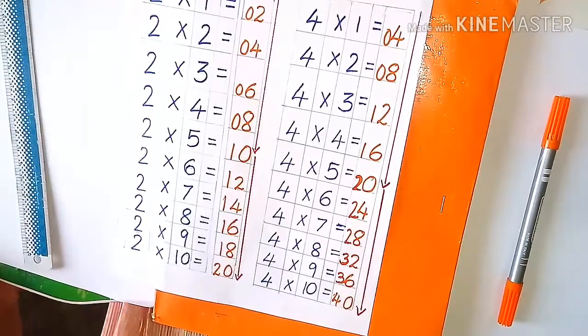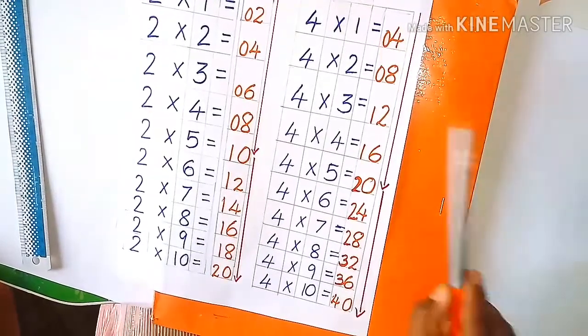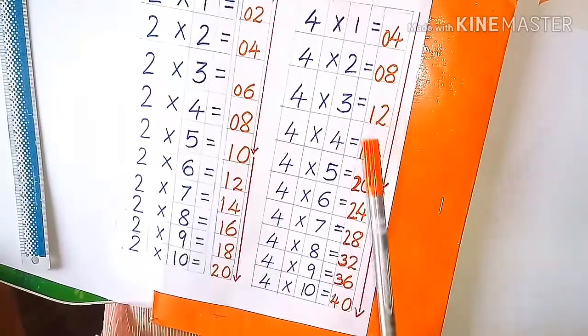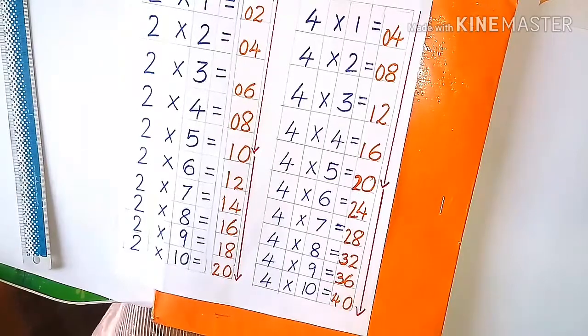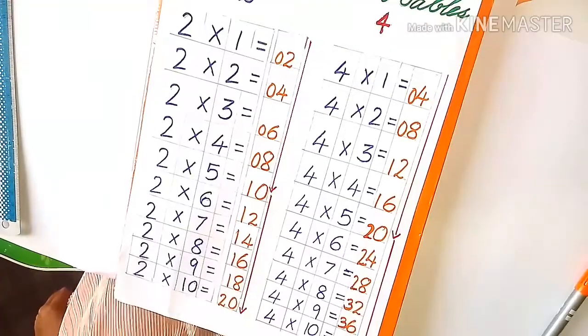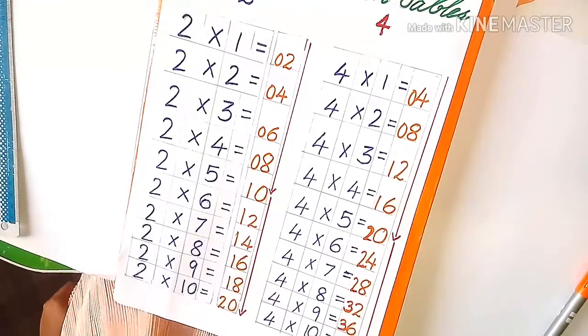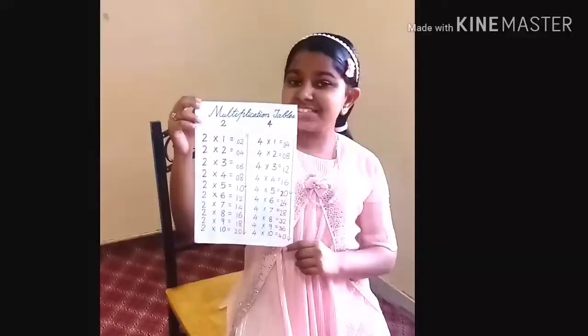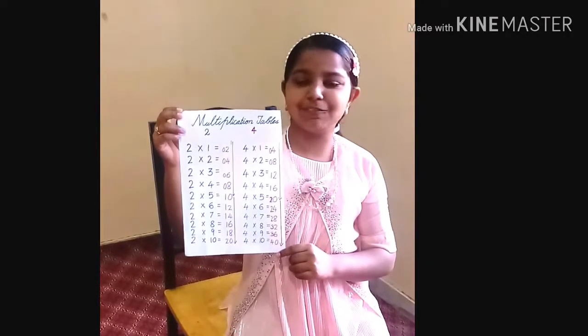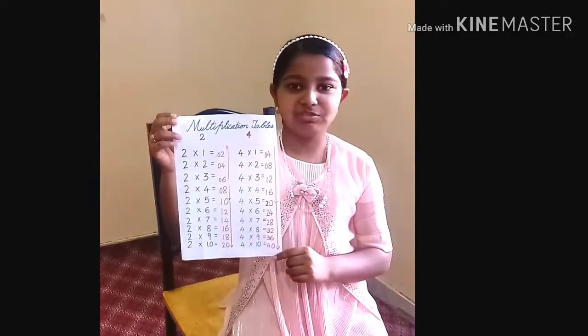So the trick on the other side is 0 0 1 1 2 2 2 3 3 4. This is a very easy method to learn the multiplication tables.